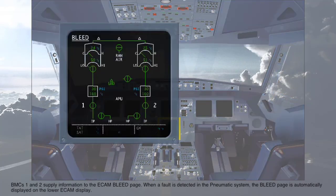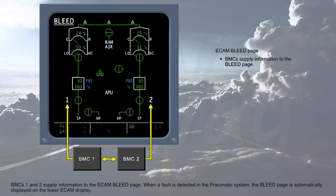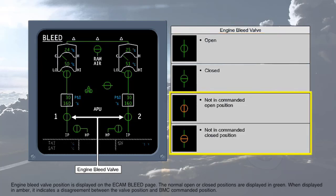The BMCs 1 and 2 supply information to the ECAM bleed page. When a fault is detected in the pneumatic system, the bleed page is automatically displayed on the lower ECAM display. Engine bleed valve position is displayed on the ECAM bleed page. The normal open or closed positions are displayed in green. When displayed in amber, it indicates a disagreement between the valve position and the BMC commanded position.